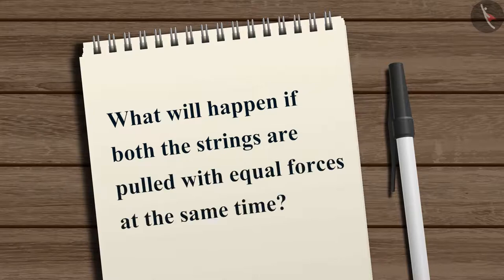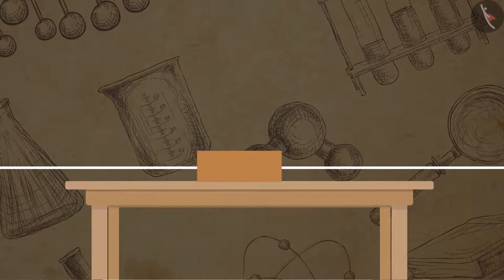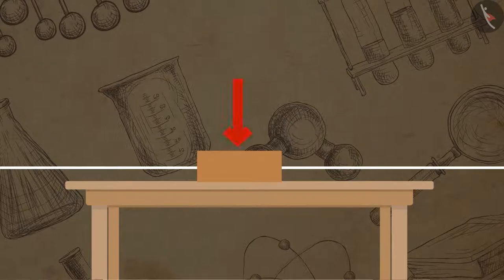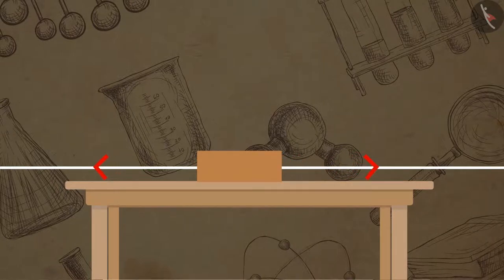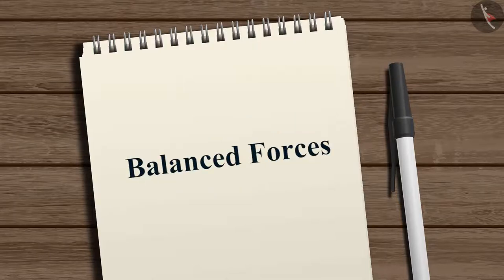But what do you think will happen if both the strings are pulled with equal forces at the same time? That is correct, the block will not move to either side. Since the block is pulled in two opposite directions with equal forces at the same time, the net force becomes zero and hence the block does not move. Such forces are called balanced forces. Here no changes in the state of rest is observed.